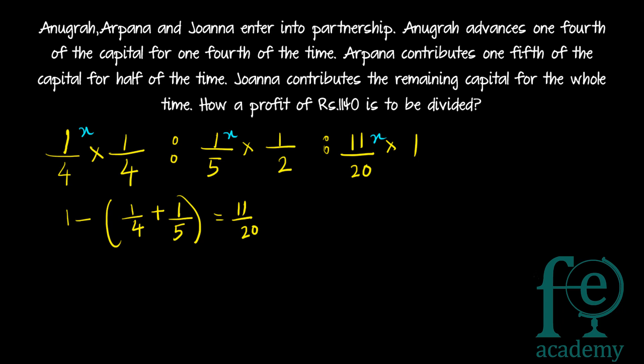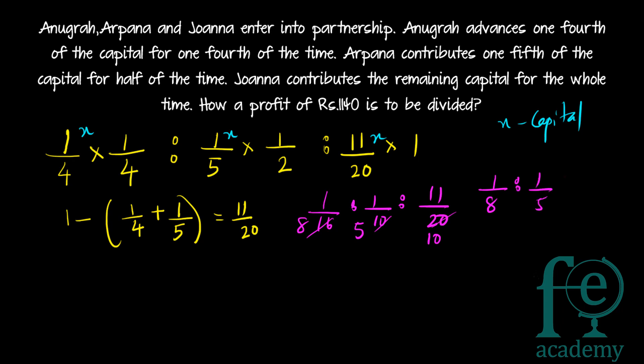So Anigradh's contribution will be one-by-four X, Arpanna will be contributing one-by-five X, and Johanna will be contributing eleven-by-twenty X, where X is the capital. The time period is one-fourth of the year for Anigradh, half of the year for Arpanna, and Johanna is contributing for the whole year. So the ratio is one-by-four into one-by-four, to one-by-five into one-by-two, giving us one-by-eight is to one-by-five is to eleven-by-twenty.